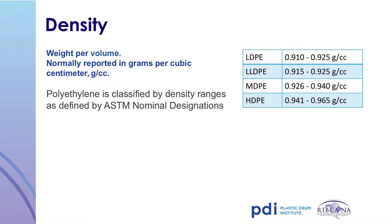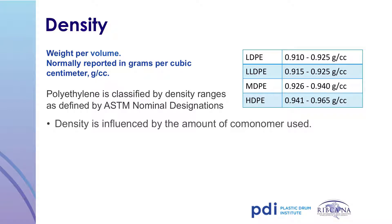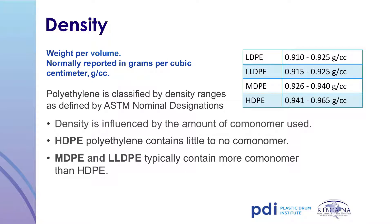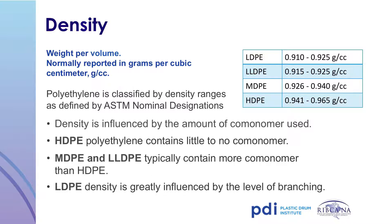Resins are sorted according to type as follows: low density, linear low density, medium density, and high density polyethylene. Density is expressed in terms of weight per volume, or grams per cubic centimeter. The amount of comonomer used influences the different densities — the more comonomer added, typically the lower the density. High-density polyethylene contains little or no comonomer. Medium density and linear low density contain more comonomer and are therefore more flexible. Low-density polyethylene's density is influenced by its high level of branching, similar to branches on a tree, reducing the polymer's density and making it more flexible.